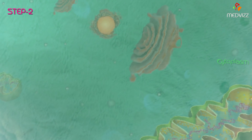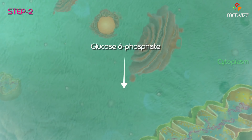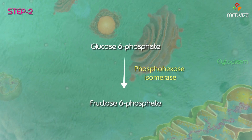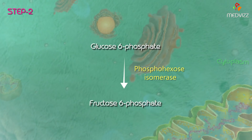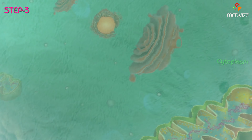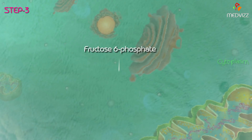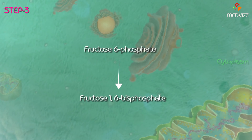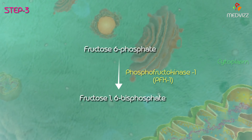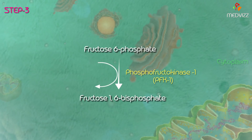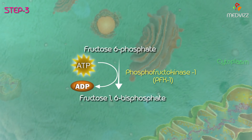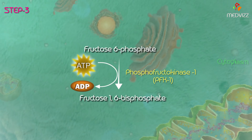In step 2 of glycolysis, glucose 6-phosphate is isomerized to fructose 6-phosphate by the enzyme phosphohexose isomerase, where an aldehyde is converted into a ketone. In step 3, fructose 6-phosphate is further phosphorylated to fructose 1,6-bisphosphate with the help of the enzyme phosphofructokinase, also abbreviated as PFK1, with energy derived from the hydrolysis of another ATP molecule. This step is mediated by the rate-limiting enzyme phosphofructokinase or PFK1.